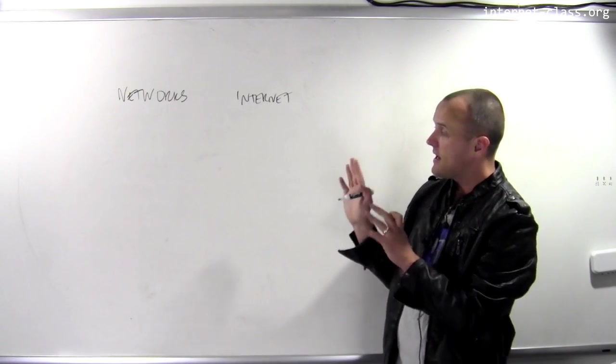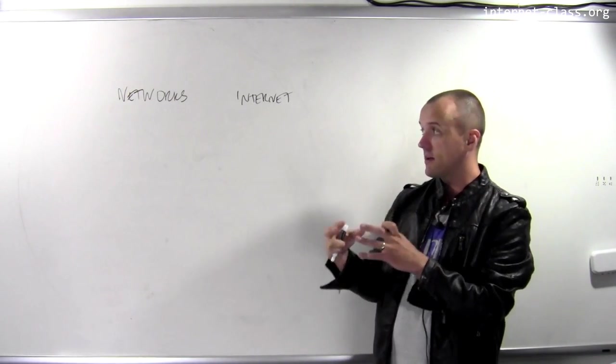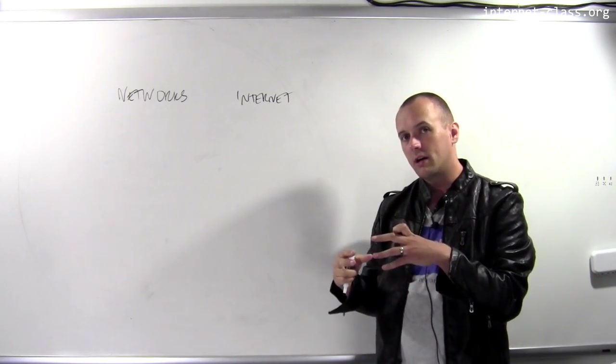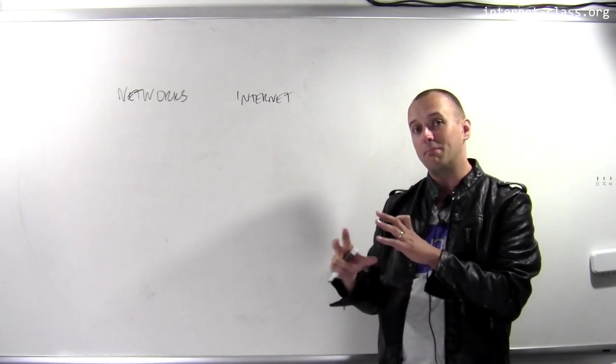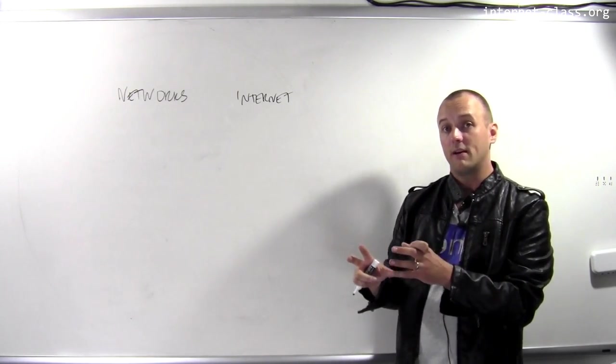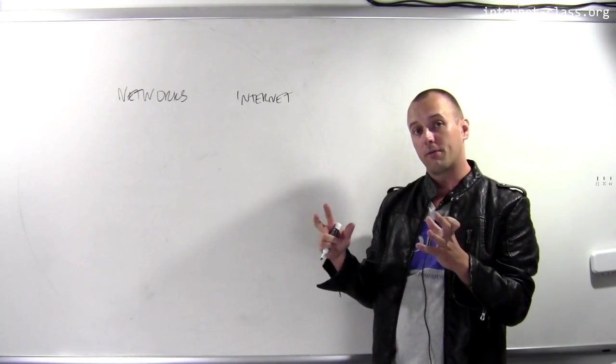The key distinction here is that when we talk about a single computer network, we're really talking about the administration, control, and maintenance of a particular network that is part of the broader internet. For example,